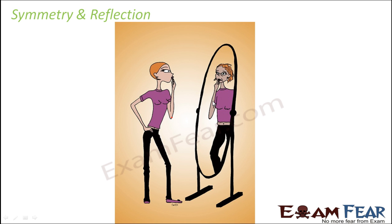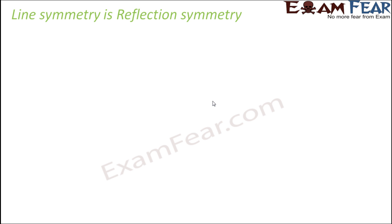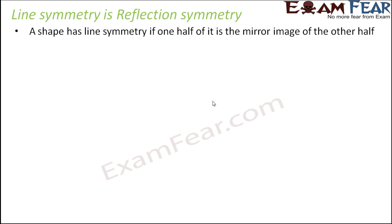That is one speciality of your mirror image. Now, how are symmetry and reflection related? When we talk about line symmetry, we basically say that there will exist a line which divides that object into two equal halves such that the two halves will overlap each other. We can also say that a shape has line symmetry if one half of it is the mirror image of the other half.